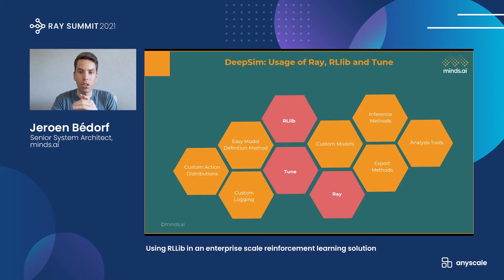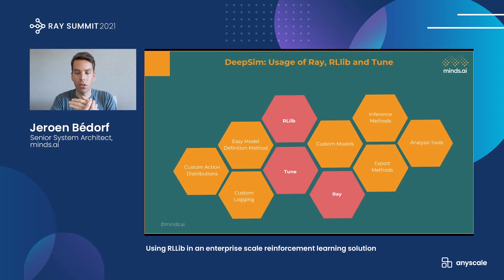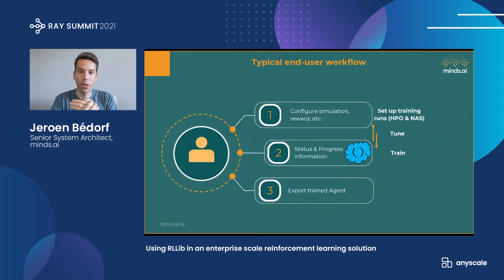All of this is used for training, and training is great, but if you can't deploy your trained model, everything you did so far is useless. Just as important is your inference pipeline and deployment software. That's where the export methods and inference methods come into play, which take the model trained with RLib and prepare it to be deployed on the actual hardware.